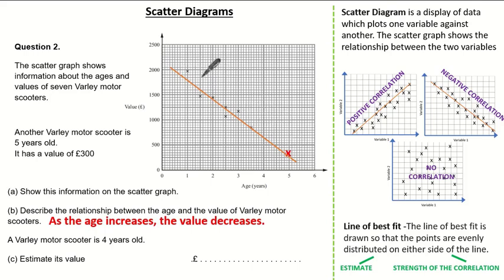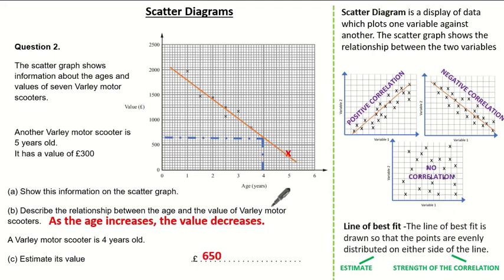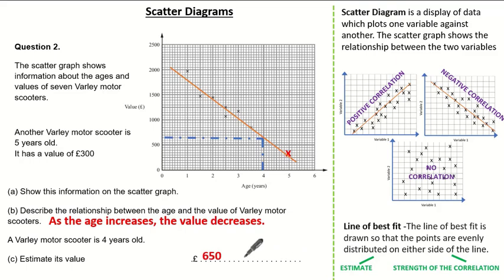From my line of best fit, I'm going to estimate. Reading 4 years old up to my line of best fit, I can clearly see I have a value of £650. In the exam, as long as a line of best fit is drawn and you've shown your working lines correctly, the examiner will accept any answer between £500 and £800. So clearly, my answer gets me full marks.